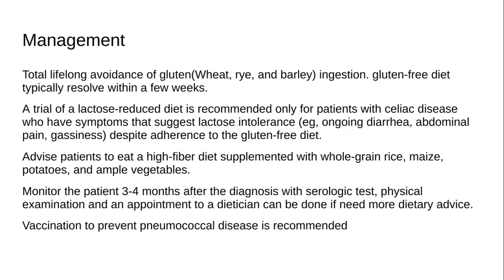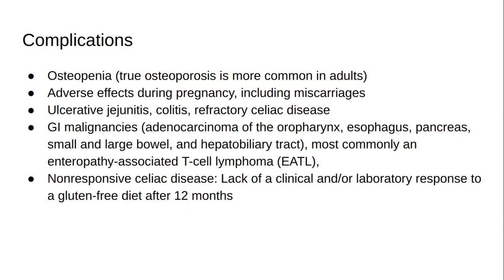Vaccination to prevent pneumococcal disease is recommended. Celiac disease is fully reversible in the majority of patients if trigger foods are avoided. However, when compliance is suboptimal, complications may occur. Complications include osteopenia and true osteoporosis (more common in adults), adverse effects during pregnancy including miscarriages, ulcerative jejunitis, colitis, and refractory celiac disease (thought to be a low-grade intestinal lymphoma, not reported in pediatric patients). GI malignancies include adenocarcinoma of the oropharynx, esophagus, pancreas, small and large bowel, and hepatobiliary tract, most commonly enteropathy-associated T-cell lymphoma (EATL), also not reported in pediatric patients.